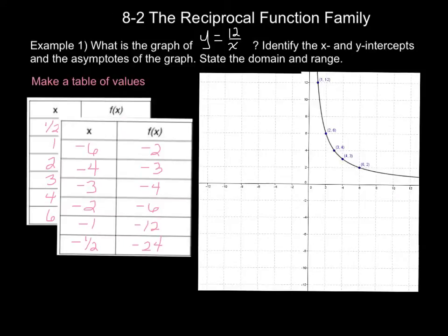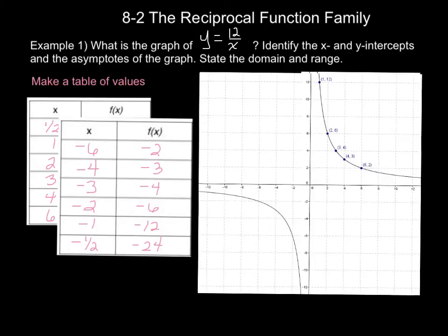Since reciprocal functions have two branches on their graphs, we need to create the other branch. So what we need to do is take the x values and use their opposites to create our other y values. We're going to plug our x values into our function, y equals 12 over x, and generate some more coordinates. Again, plot your points, connect your curve, and you arrive at two smooth branches of your graph.